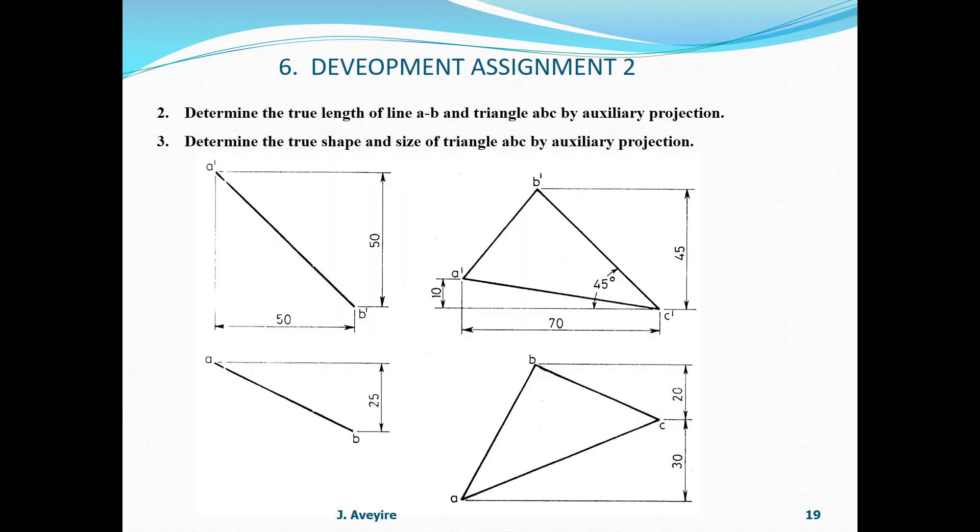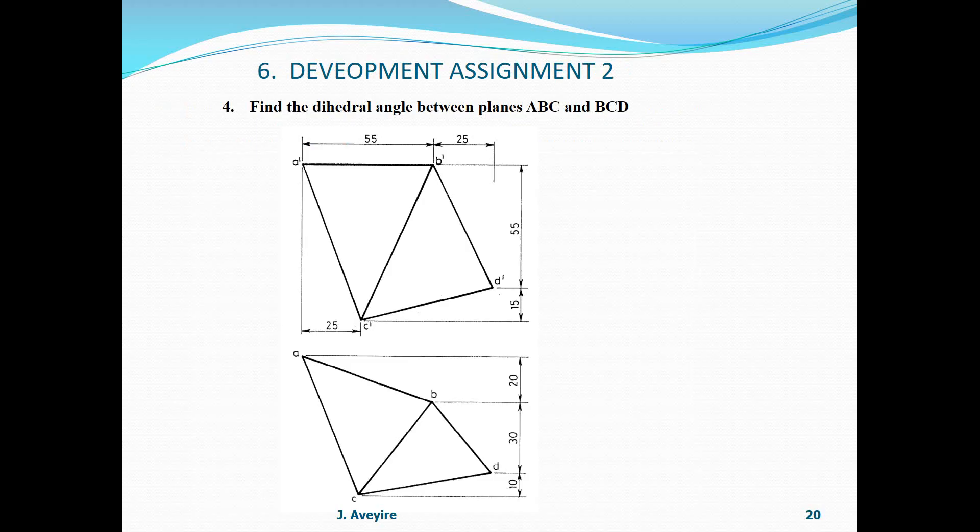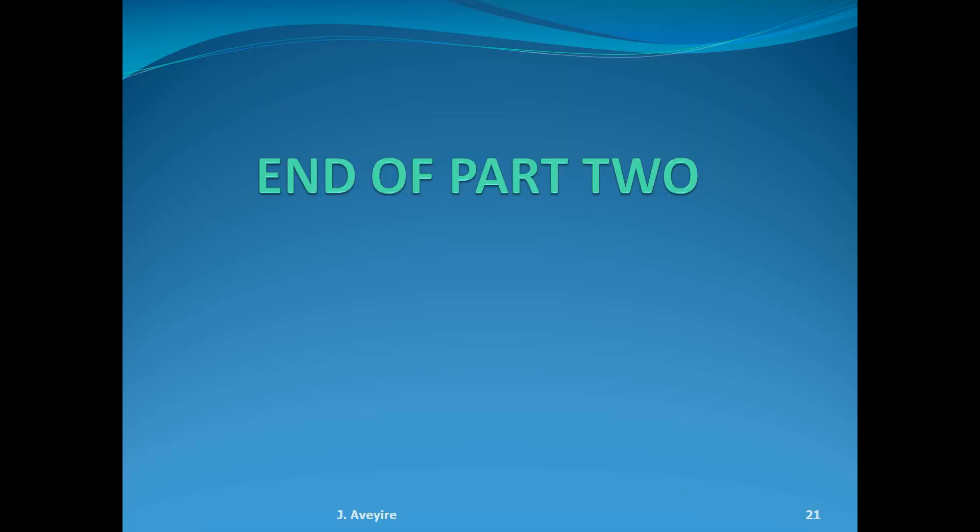Okay. Assignment 2. Question 2. Determine the true length of line AB and triangle ABC by auxiliary projections. Question 4. Find the dihedral angle between the plane ABC and BCD by auxiliary projections. Thanks. End of part 2.